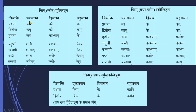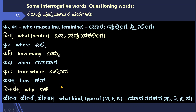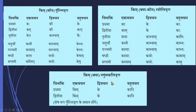There are various Vibhakti forms of Kaha, Ka. In Pullinga: Kaha, Kau, Ke; Kam, Kau, Kaan; Kena, Kaabhyaam, Kaihi; Kasmai, Kaabhyaam, Kebhyah; Kasmaat, Kaabhyaam, Kebhyah; Kasya, Kayoho, Kesham; Kasmin, Kayoho, Keshu. In Strilinga: Ka, Ke, Kaha; Kaam, Ke, Kaha; Kaya, Kaabhyaam, Kabhi. In Napumsakalinga: Kim, Ke, Kaani — first three Vibhaktis differ; remaining forms are like Pullinga. These forms of the Kim Shabda in Pullinga, Strilinga, and Napumsakalinga must be remembered to frame questions.